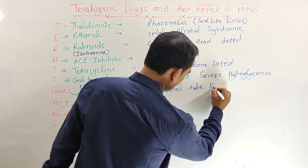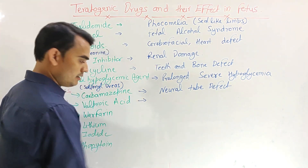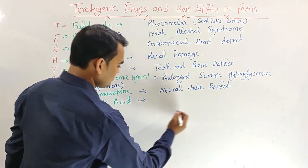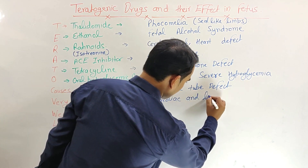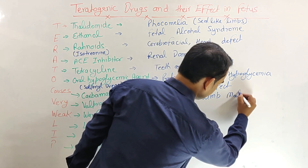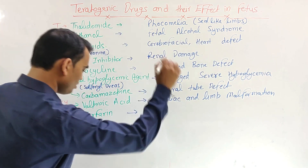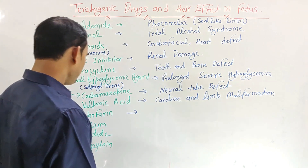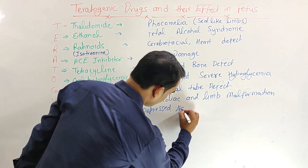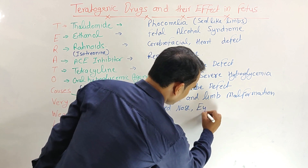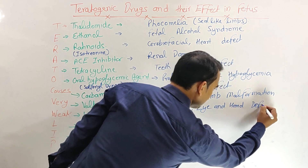Next, Valproic acid mainly causes cardiac and limb malformations. Next is Warfarin, the oral anticoagulant. Warfarin mainly causes depressed nose, and eye and hand defects in the fetus.